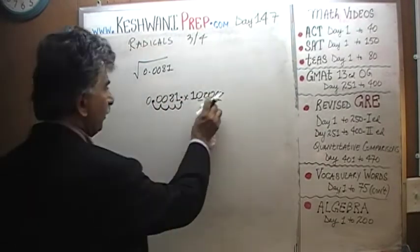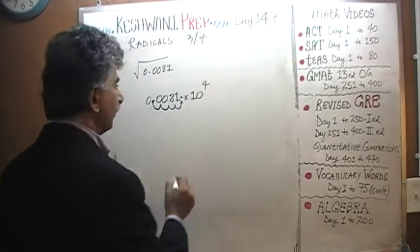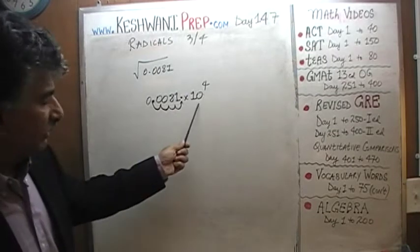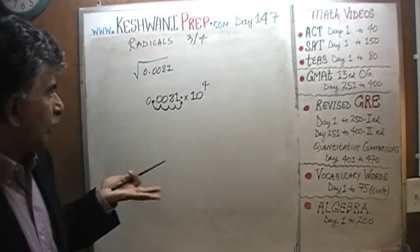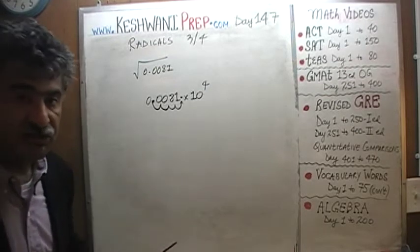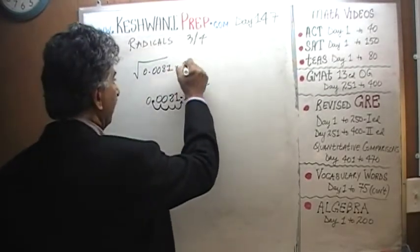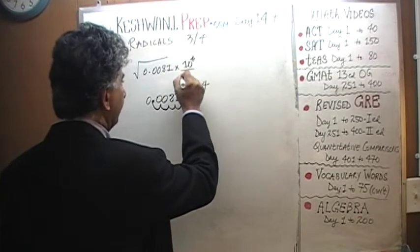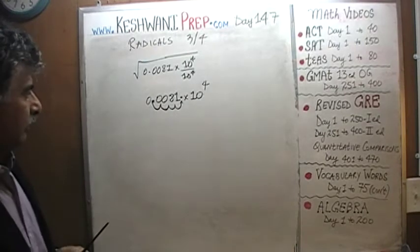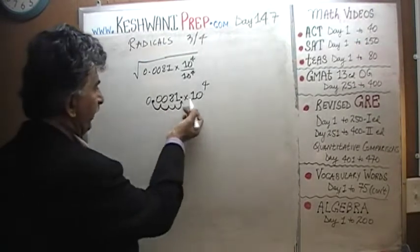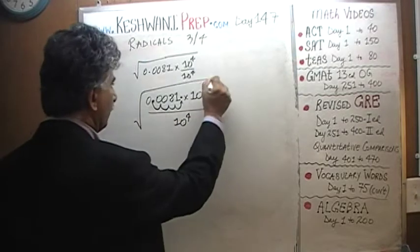So that's exactly what we're going to do — we're going to multiply by 10 raised to the 4th power. But the problem is we cannot simply multiply this quantity by 10^4 and leave it, because then it's no longer what is given to us. We cannot change the given quantity. So what we're going to do is multiply the top and the bottom by 10^4 and extend the square root sign. By doing so, we have √(0.0081 × 10^4 / 10^4).